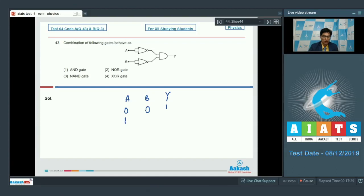While when A is 1, B is 0, Y has an output 0. When A is 0, B is 1, Y has an output 0. This truth table corresponds to the NOR gate, and hence the correct answer for this question is option number 2.